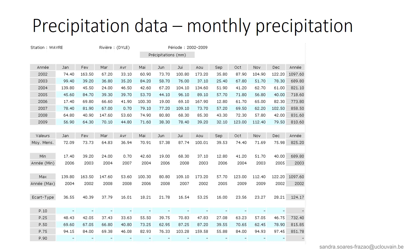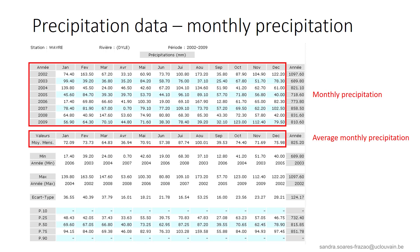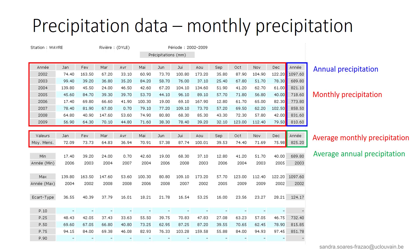Knowing all the daily precipitation, it is possible to calculate monthly totals for different years and also average monthly precipitation. July and August appear to be the wettest months in Belgium, which is maybe unexpected as these are summer months. Adding the monthly totals gives the annual precipitation, and it can be observed that 2002 was a very wet year compared to 2003, which was very dry. Averaging these values gives the average annual precipitation, which for the station of Wavre, close to Louvain-la-Neuve and the University, is 825 mm — close to the Belgian average of 800 to 850 mm per year.